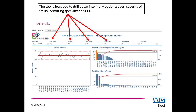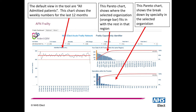There is a series of drop-down menus that allow you to select filters including age, severity of frailty, admitting specialty, and CCG. Every time you use those drop-down menus, the charts will alter accordingly.